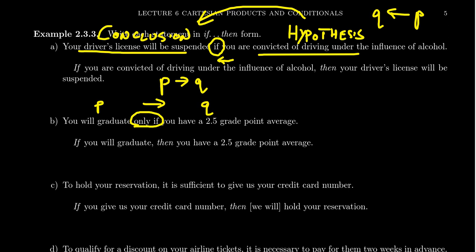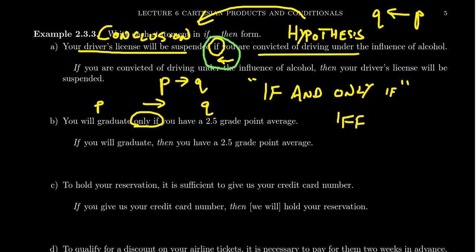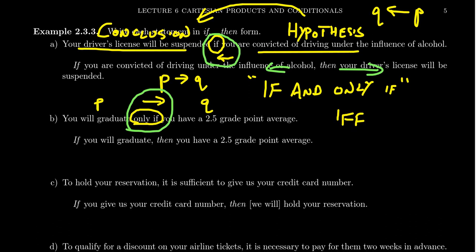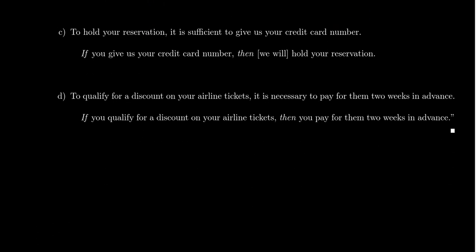This has come up before — the phrase 'if and only if,' which we commonly abbreviate as IFF. The word 'if' by itself gives you one direction, and the phrase 'only if' gives you the other direction. So 'if and only if' means you want arrows going in both directions, and it's a way of saying that two statements are logically equivalent to each other. We'll talk about this more in the next lecture.